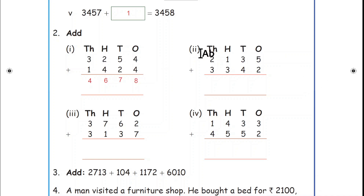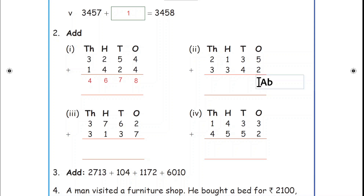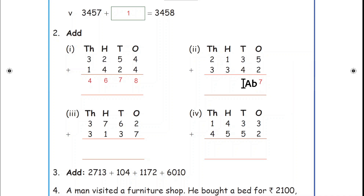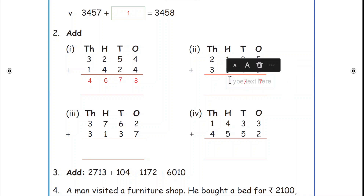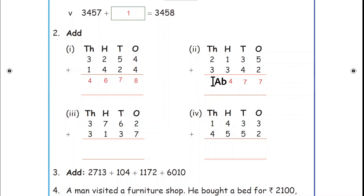Move to the second sum. Four digits are given: ones, tens, hundreds, thousands. Ones place: 5 plus 2 = 7. Tens place: 3 plus 4 = 7. Hundreds place: 1 plus 3 = 4. Thousands place: 2 plus 3 = 5.